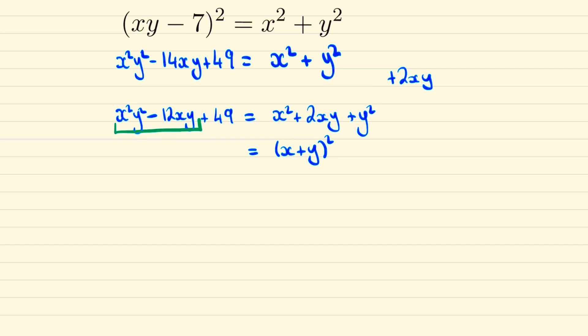On the left side we can look at this bit in green and recognize that we can complete the square on it. So that can be written as xy minus 6 all squared minus 36 and we'll add back in the 49.